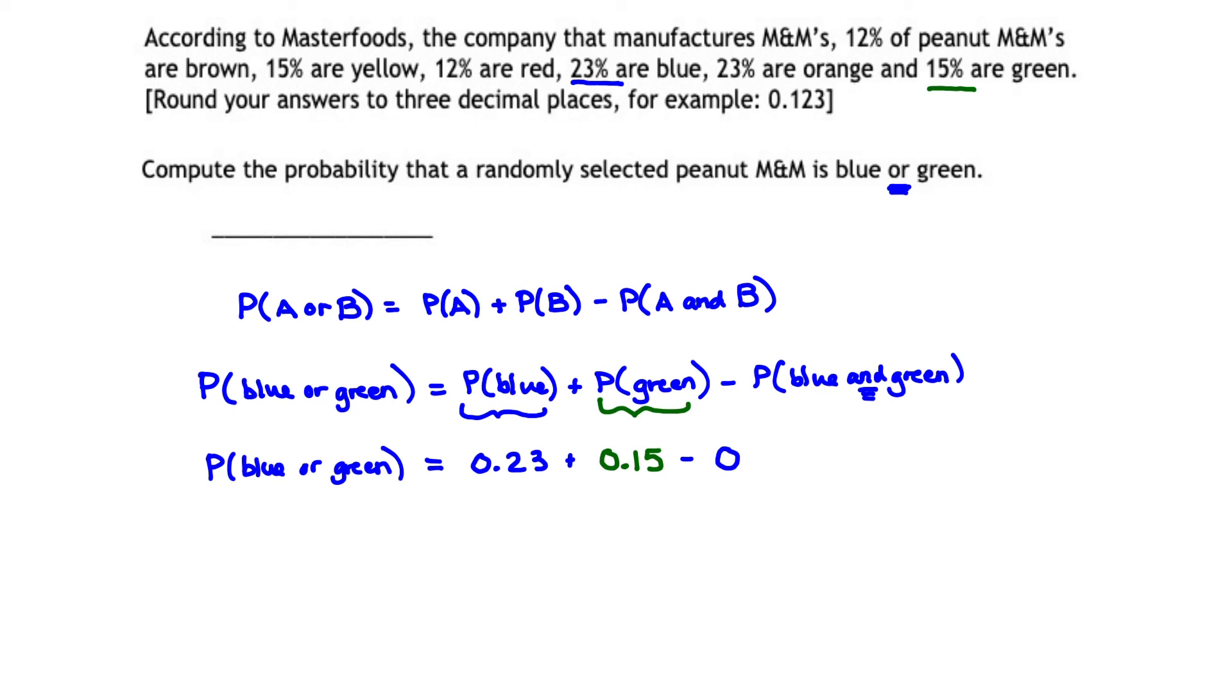That tells us the probability that your M&M is blue or green is equal to 0.23 plus 0.15, which gives you 0.38 or 38%. The probability that a randomly selected M&M is blue or green is 0.38.